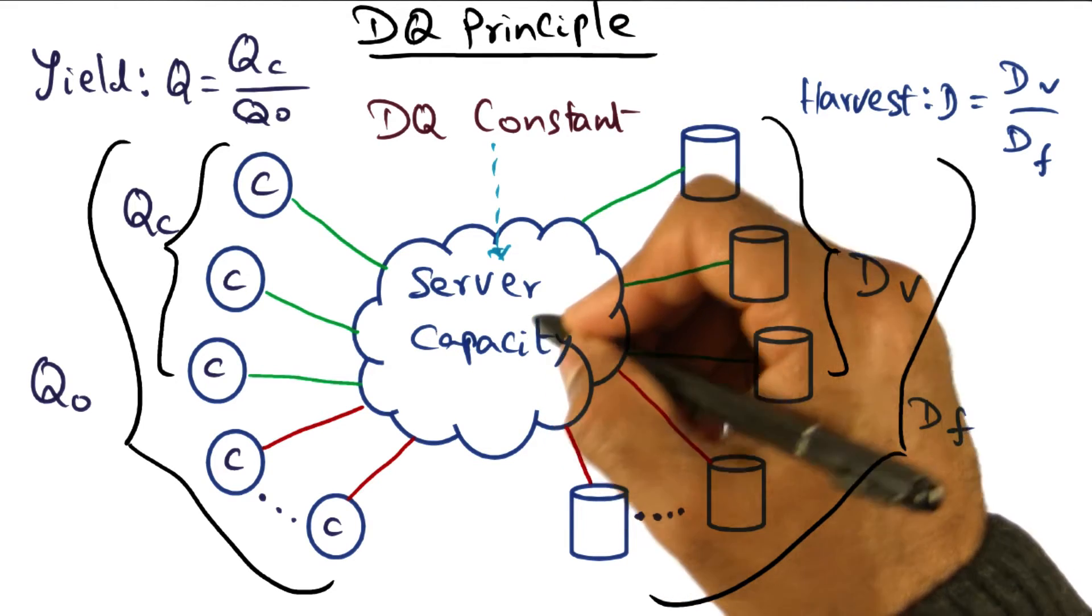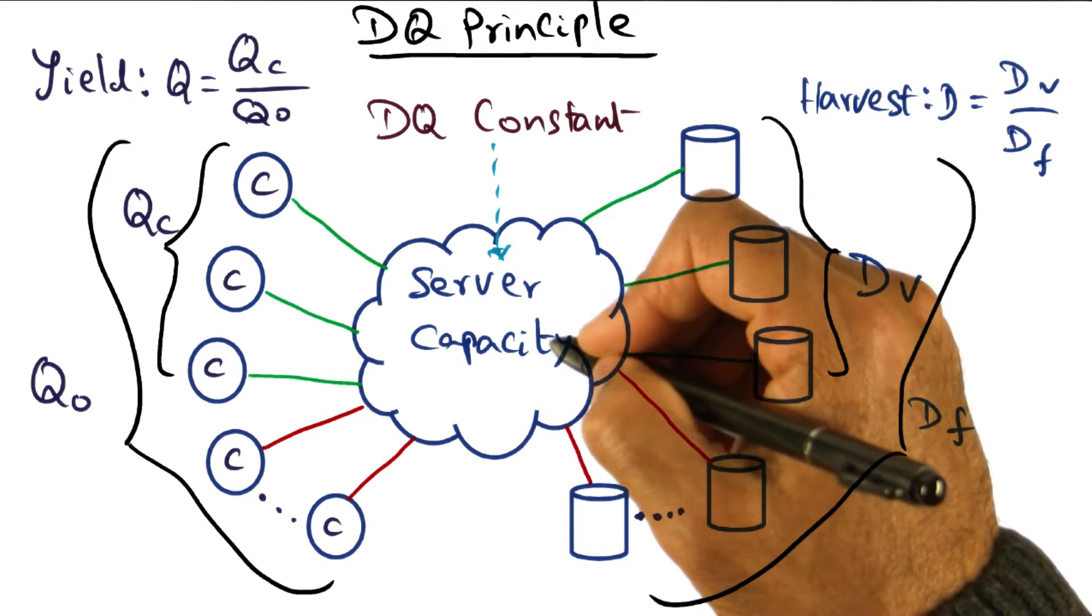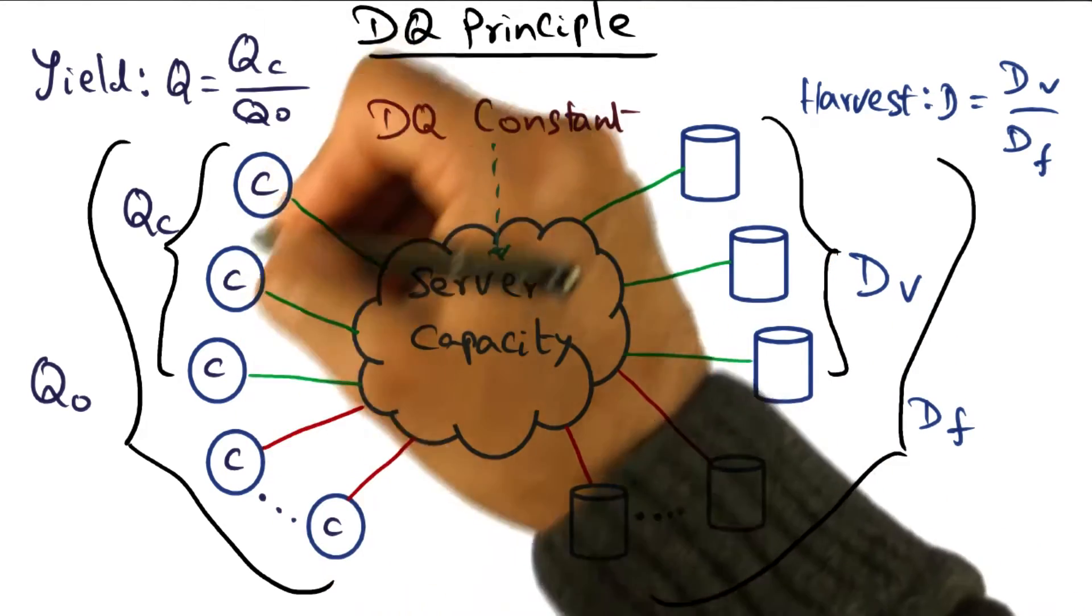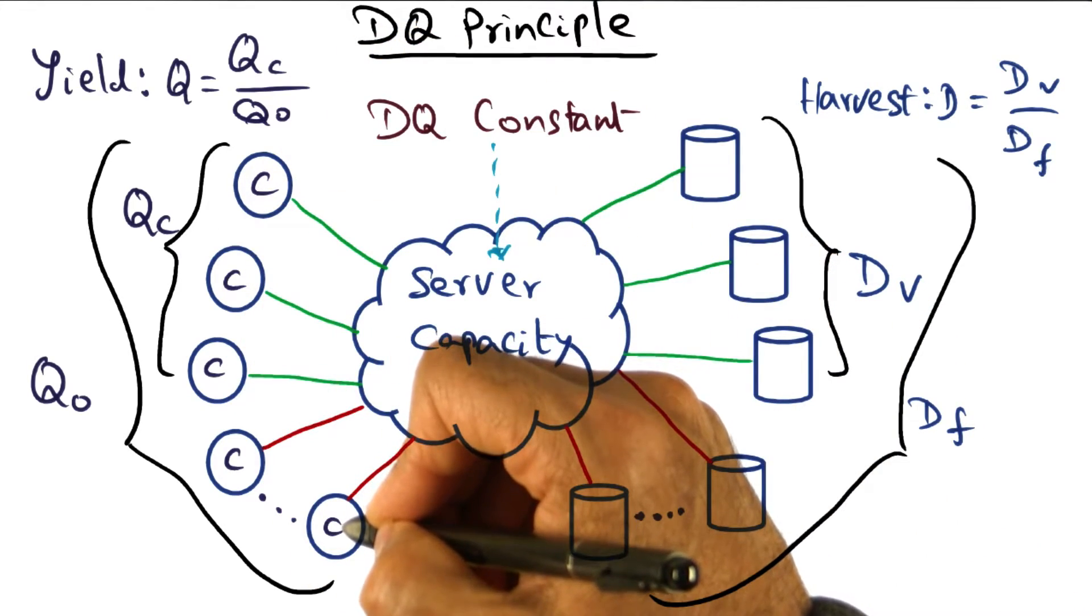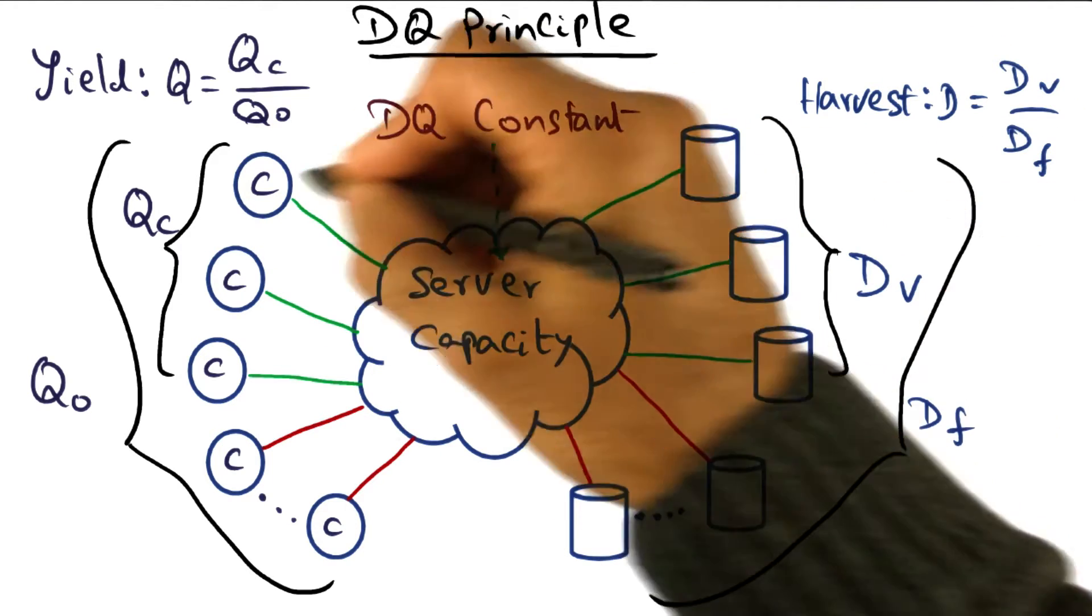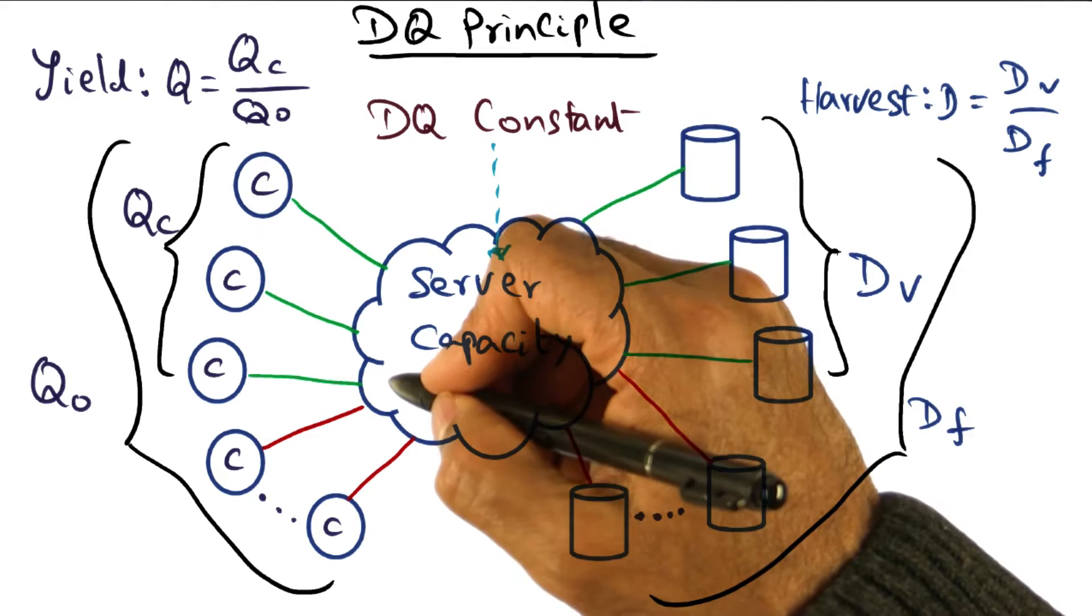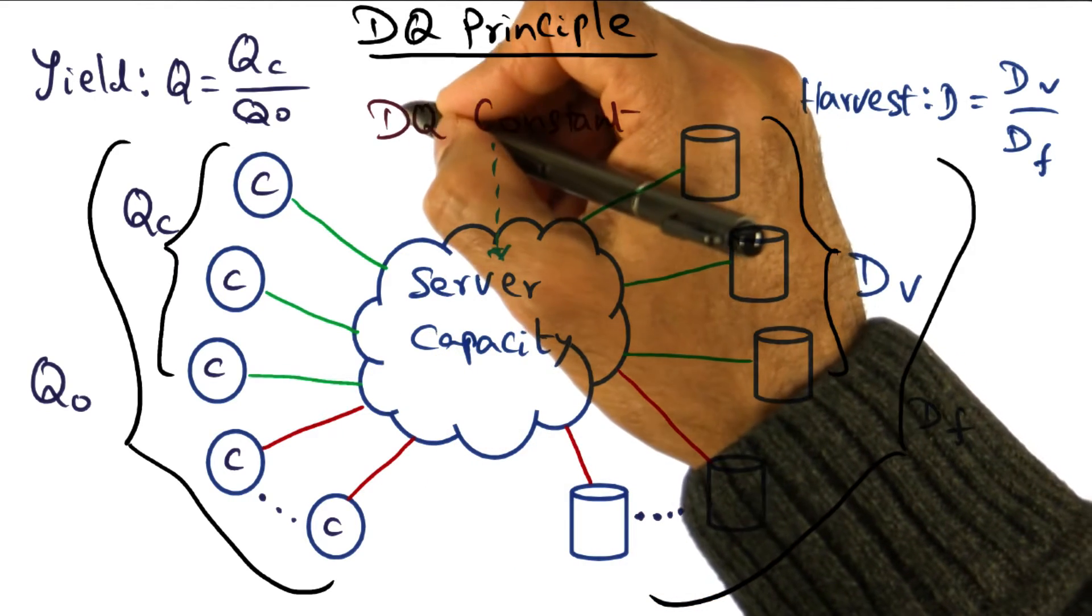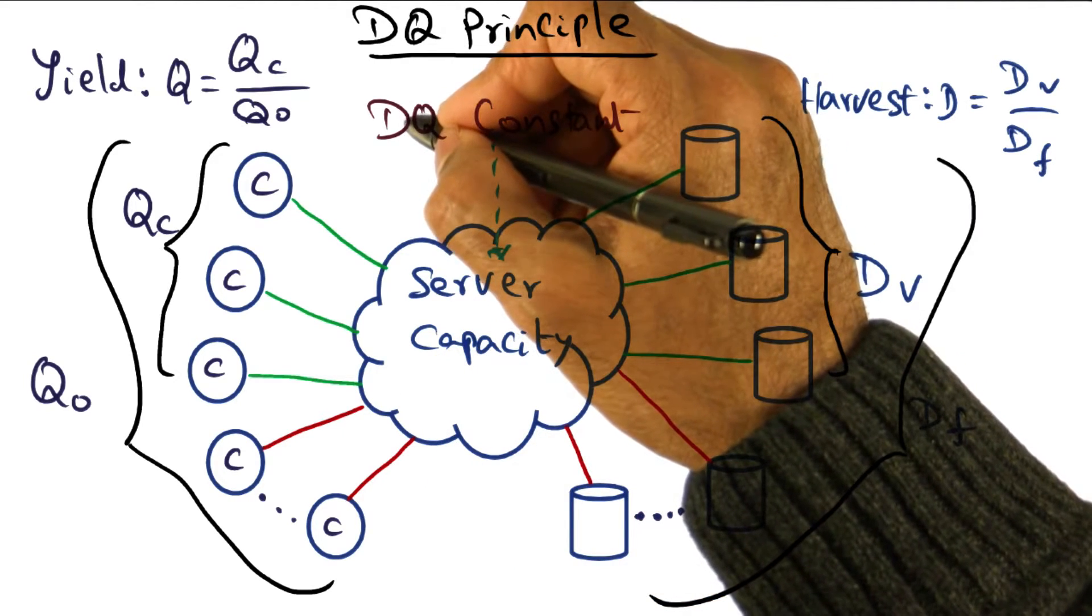Said differently, for a given system capacity, we can increase the number of clients that we are serving if we reduce the amount of data that we're using to process the incoming queries. That is, we're increasing Q by decreasing the harvest, or D.